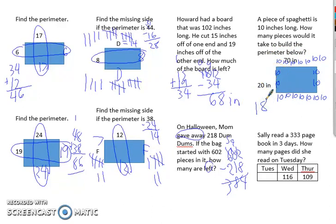Sally read the 333 page book in three days. How many pages did she read on Tuesday? Okay, so we're going to add up Wednesday and Thursday, which gets you to 225. And then take that away from the 333. Got a little bit of borrowing going on. Thirty minus five is eight. Two minus two is nothing. Three minus two is one. One hundred and eight pages.